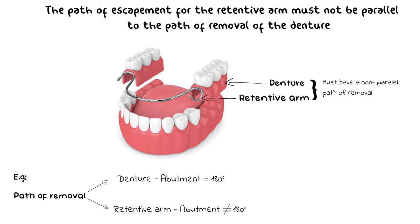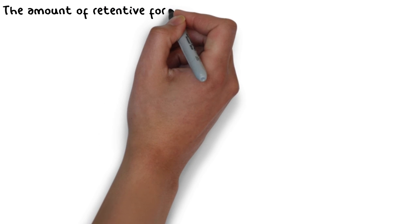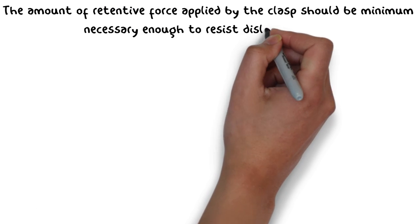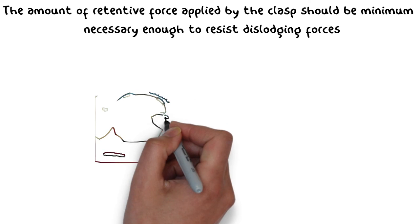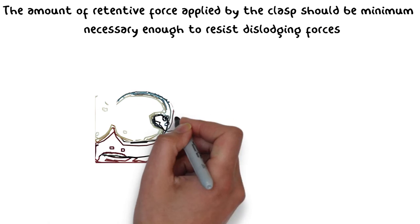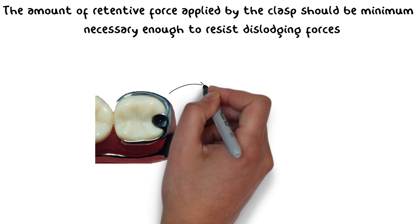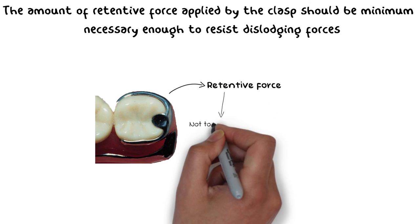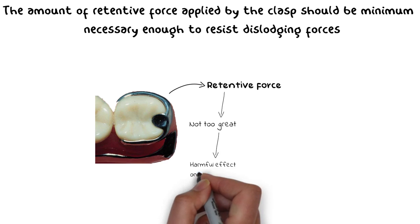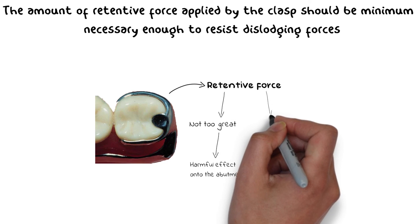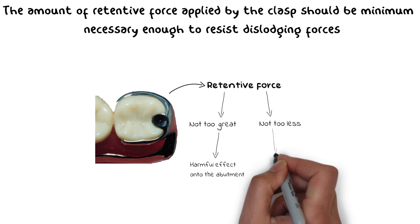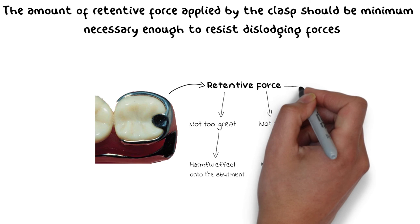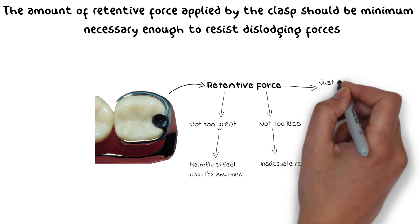The amount of retentive force provided by the clasp onto the abutment should always be the minimum necessary to resist reasonable dislodging forces — not too much to overpower the reciprocal component and cause harmful effects on the abutment, and not too little to provide inadequate retention. It should be at the borderline necessary to provide just enough retention to the denture.